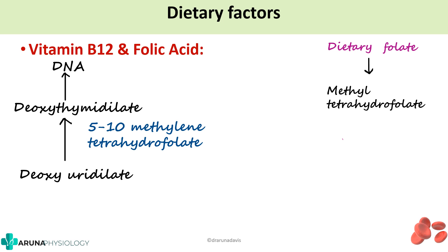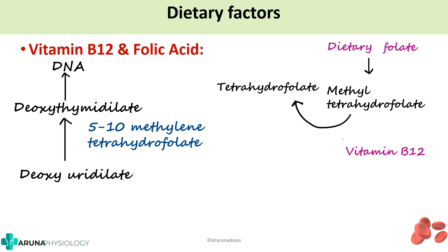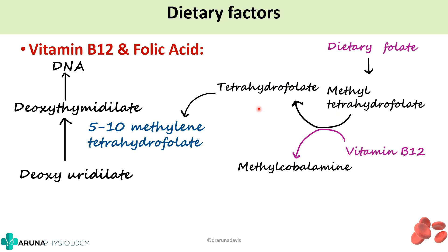Methyl tetrahydrofolate must be converted to its active form, tetrahydrofolate. This is done by vitamin B12 — vitamin B12 helps in conversion of methyl tetrahydrofolate (inactive form) to the active tetrahydrofolate. In this process there will be formation of methyl cobalamin. It is this tetrahydrofolate which is then converted to 5,10-methylene tetrahydrofolate. So there is an interaction between folic acid and vitamin B12 — we need dietary folate and we need vitamin B12, and these two vitamins are very important for DNA maturation, which in turn is involved in maturation of precursor cells.